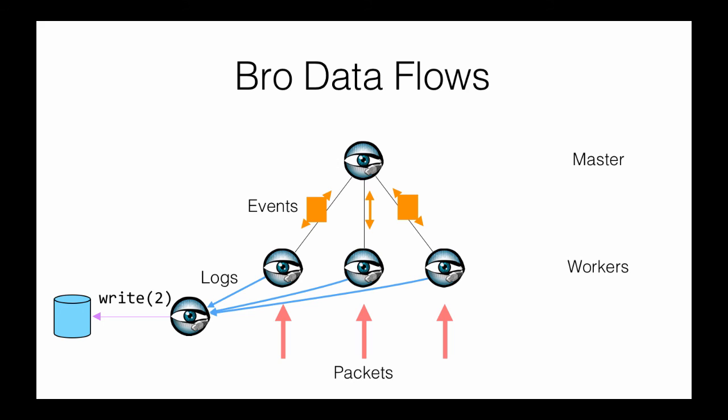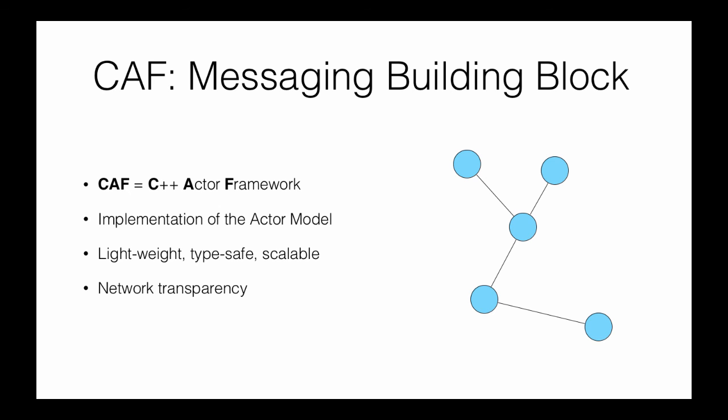The building block underlying Broker is the C++ Actor Framework (CAF), an implementation of the actor model. It handles shipping messages from A to B. If endpoints are on the same process, sending a message translates to just passing a pointer. If message passing means transmitting data over the network to another machine, serialization takes place. It chooses the most efficient method based on the use case.